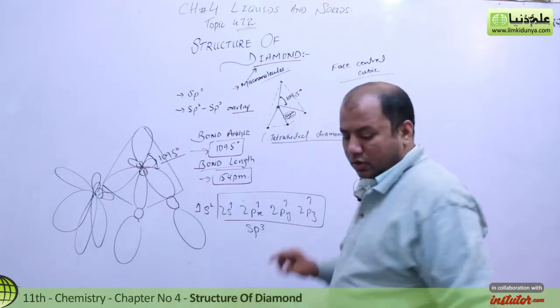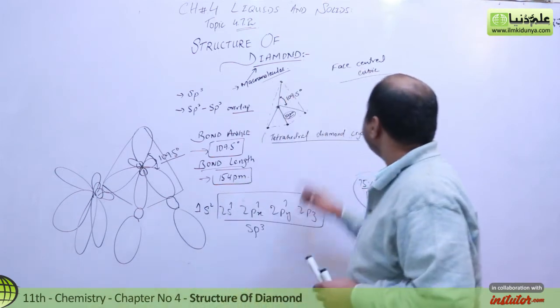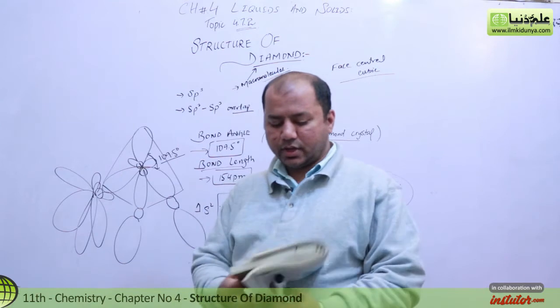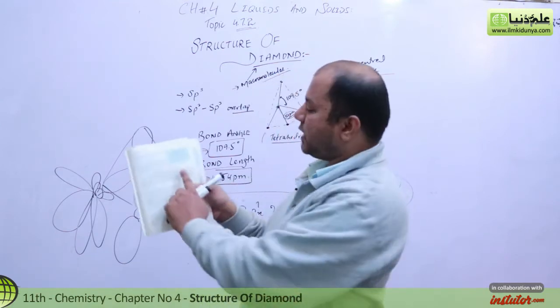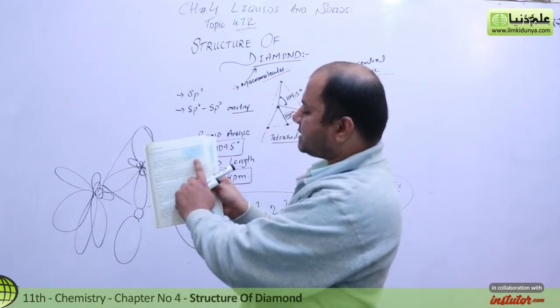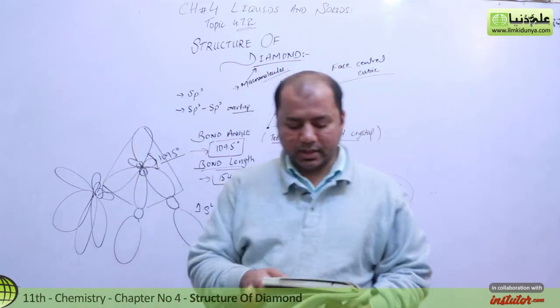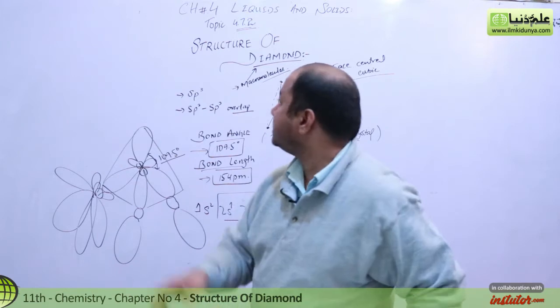The things go on, and in the end you get a face-centered cubic structure. This is the face-centered cubic structure of diamond, and that's the structure I'm discussing.